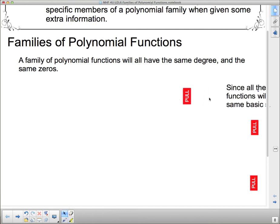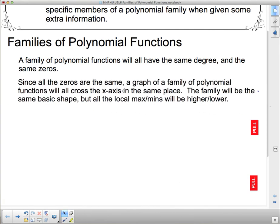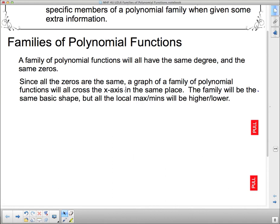So let's see what else we have here. Since all the zeros are the same, a graph of a family of polynomial functions will all cross the x-axis in the same place. The family will be the same basic shape, but all the local max or mins will be higher or lower.